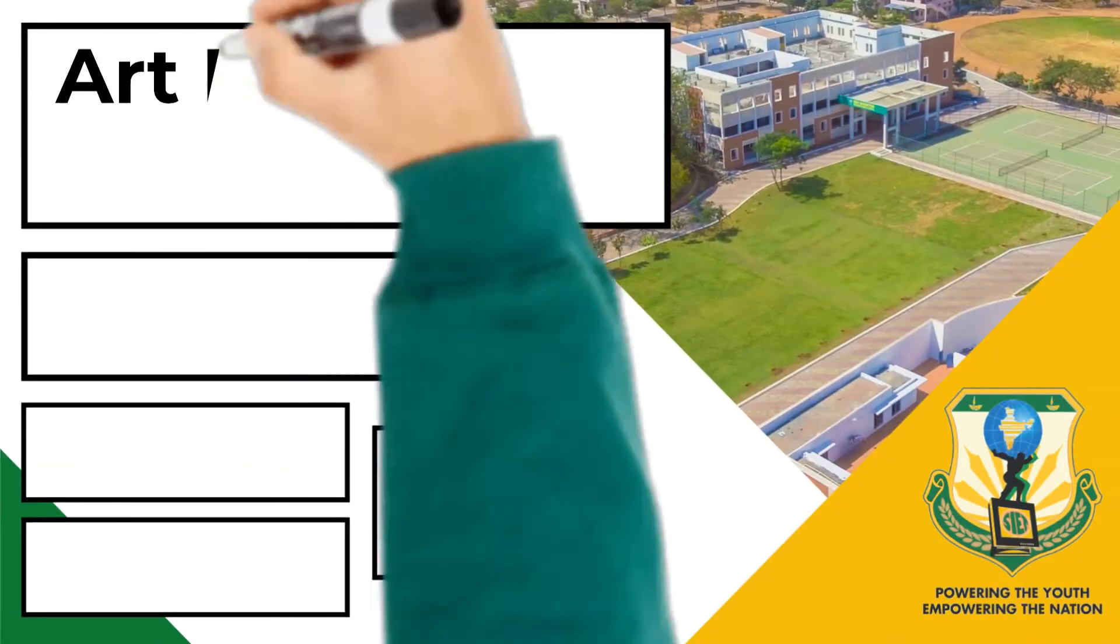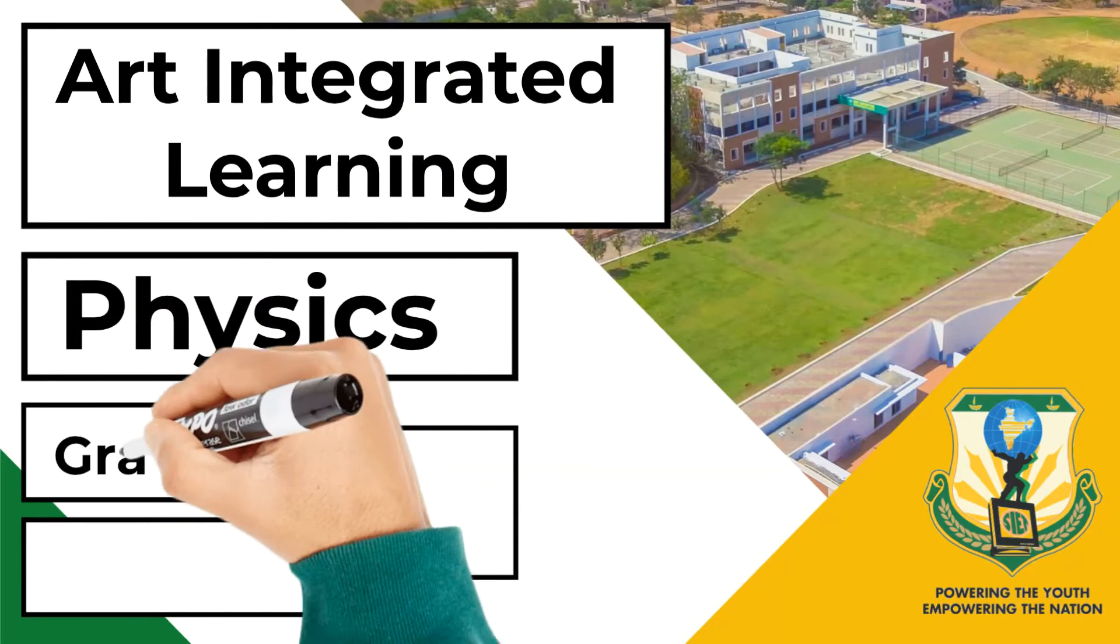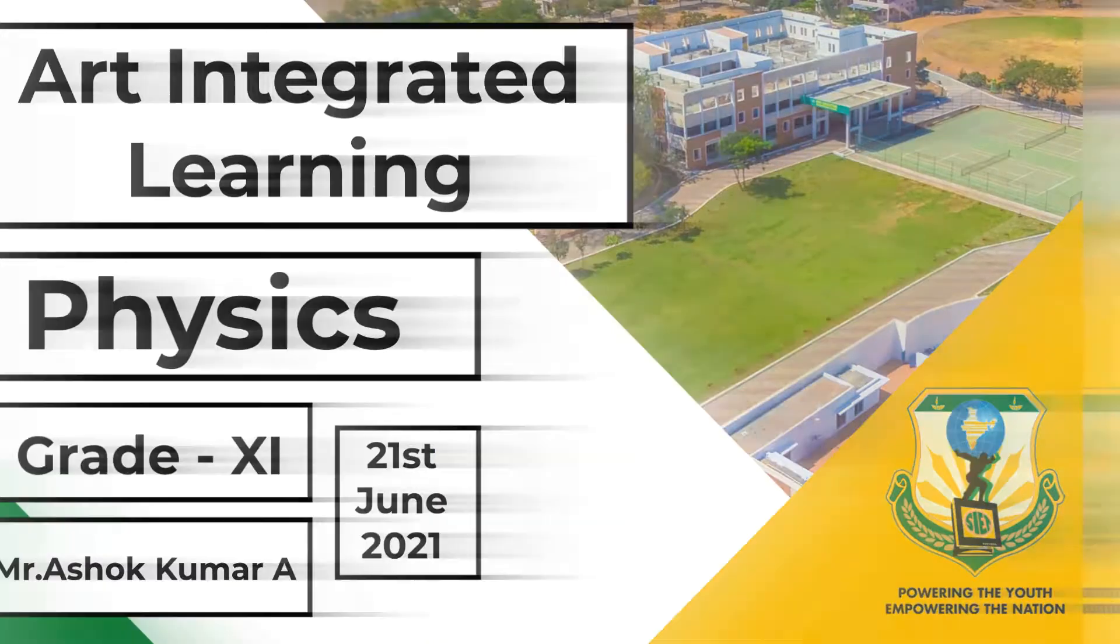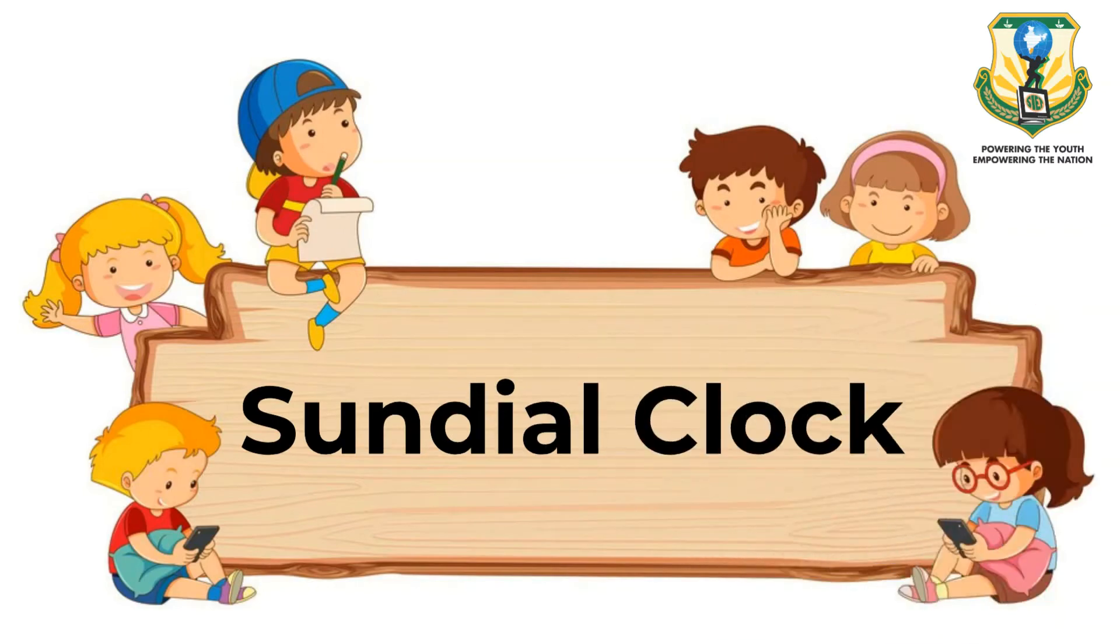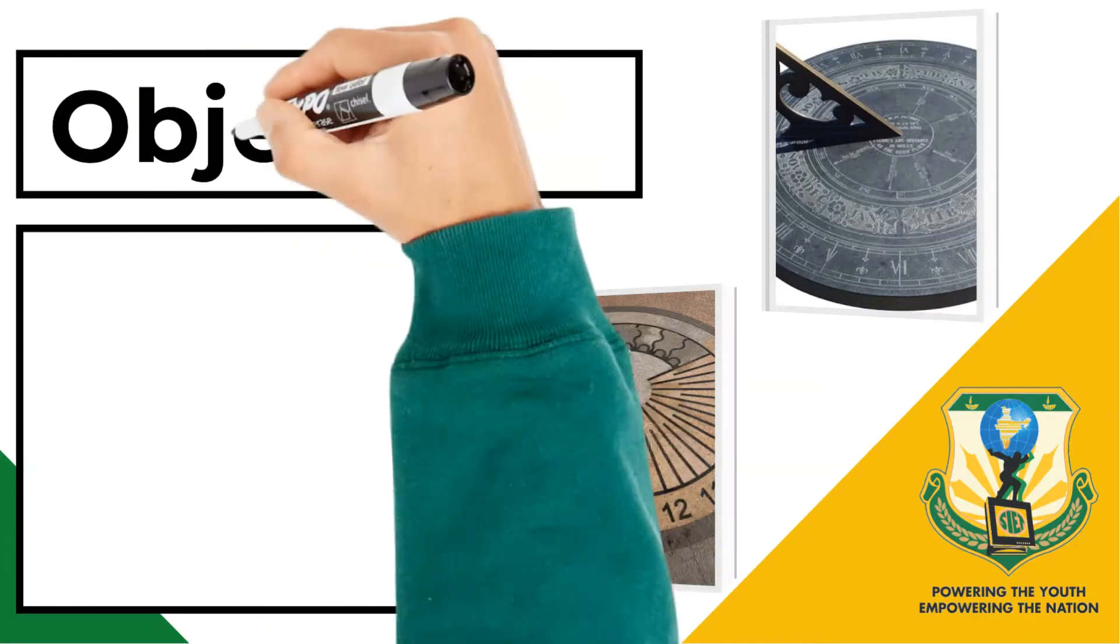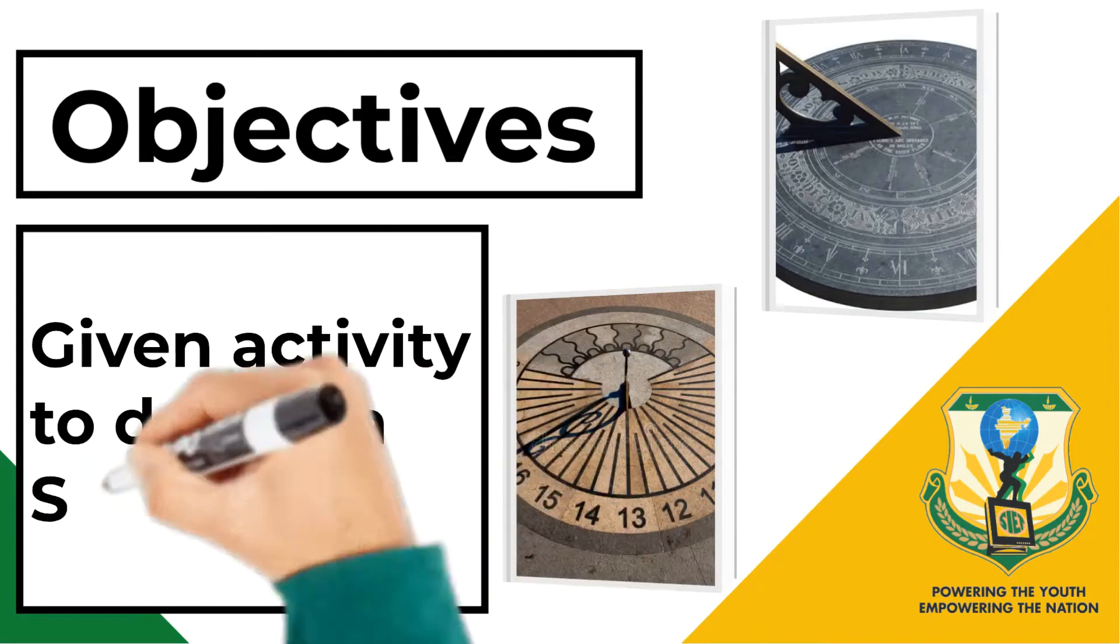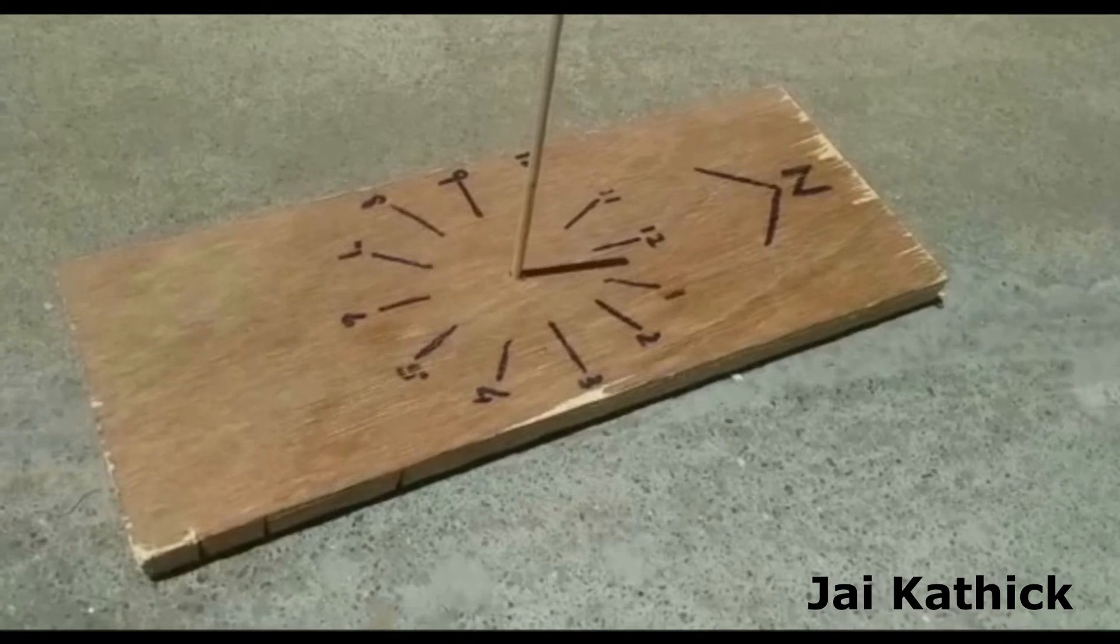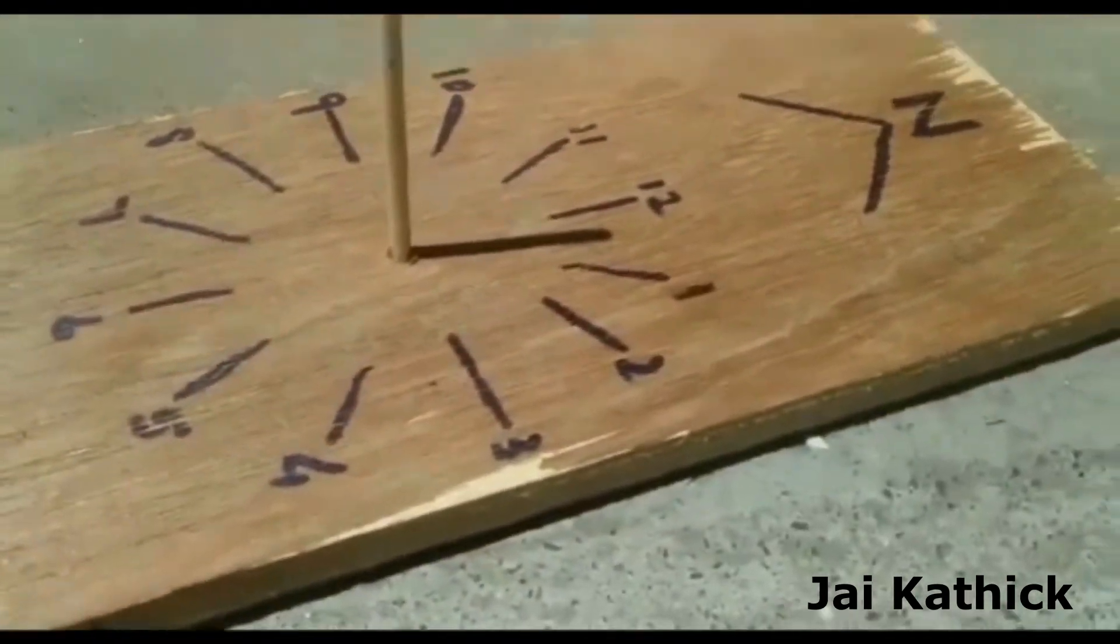Today I will explain to you about the sundial. A sundial is an instrument which is used to see time in earlier days.